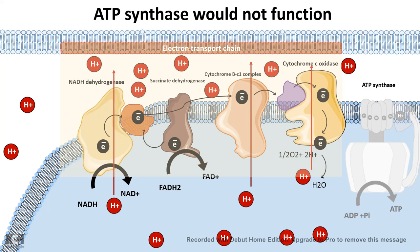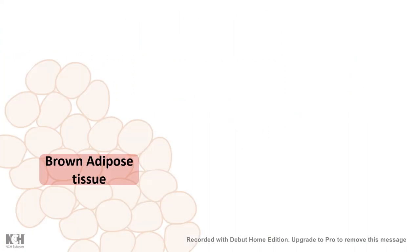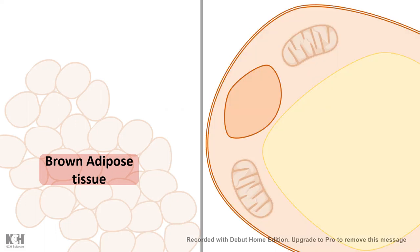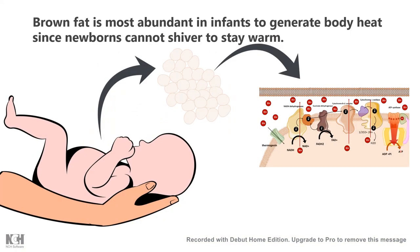While it appears wasteful, there are cases where uncoupling takes place physiologically. The biggest example is brown adipose tissue. In brown adipose tissue, mitochondria differentially express a protein known as thermogenin. Thermogenin works like an uncoupler — it's a channel for hydrogen ions that bypasses ATP synthase, quickly passing hydrogen ions from the intermembrane space into the matrix, rapidly dissipating the proton gradient.